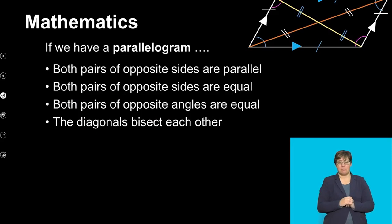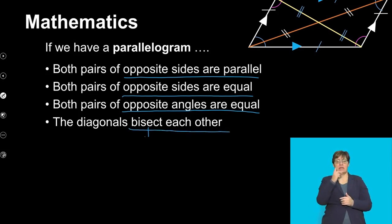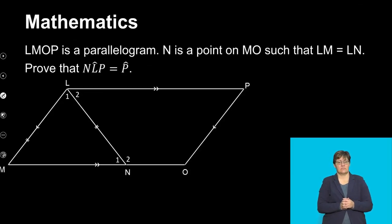Now if we have a parallelogram, just to remind ourselves of what a parallelogram is all about. We know that both pairs of opposite sides are parallel. And we also know that they are not only parallel, they are also equal to each other. We know that both pairs of opposite angles are equal and then the diagonals bisect each other. Remember bisect will mean cut in half. Now let's put this into a more needy way of doing it. Let's try and see how can I now use this in a diagram.